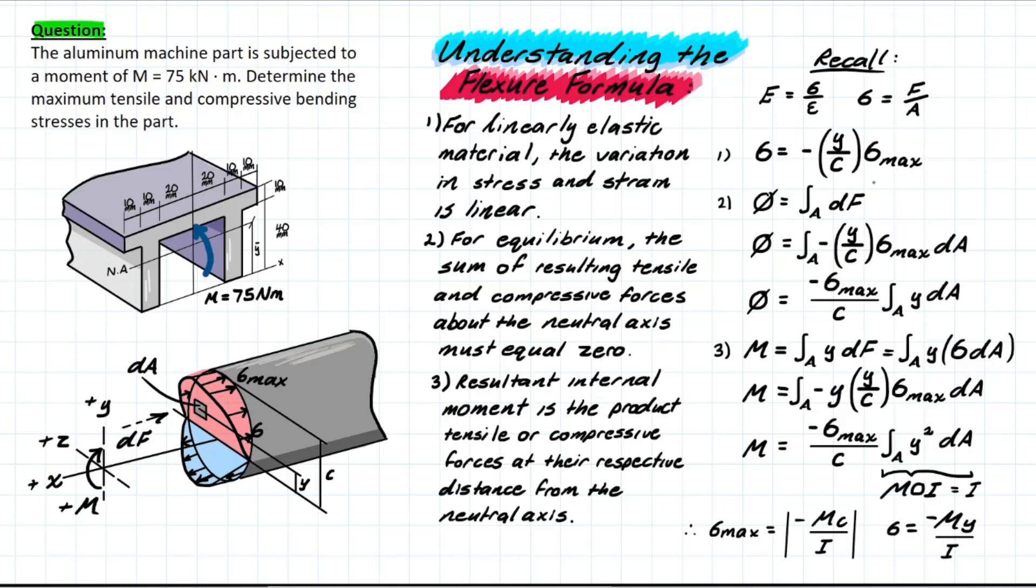over the max distance from the neutral axis to the edge of our member times the max stress that's developing. And all that's doing is simply taking similar triangles to relate the linearly linear proportion of stress increase.